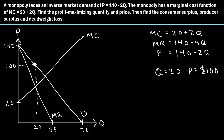The consumer surplus is the triangle under the demand curve but above the market price, up to the market quantity. Using the formula ½ × base × height: CS = ½ × 20 × (140 minus 100) = ½ × 20 × 40 = 10 × 40 = $400. So the consumer surplus is $400.